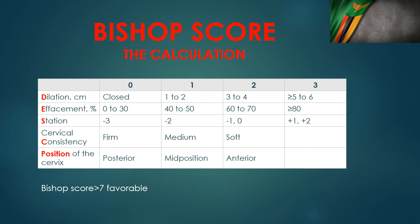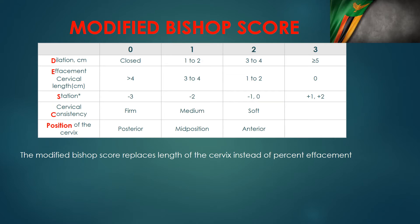In the modified Bishop score, the only modification is that effacement, or percent effacement, has been replaced by cervical length. Evidence shows that using cervical length as a measure of effacement is much better because the inter-observer reliability is much higher — two people measuring cervical length are more likely to agree with each other than when using percent effacement.